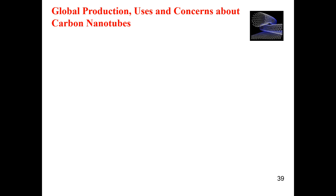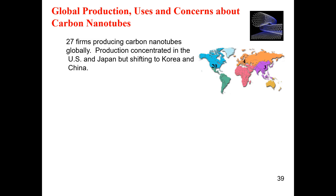There are 27 firms producing carbon nanotubes globally. Production is concentrated in the US and Japan, but then shipped to Korea and China. The major carbon nanotube production facilities are basically located in the US and Japan. After being synthesized, these materials are then shipped to Korea and China for making excellent devices, since Korea and China are major hubs for nanotechnology device manufacturing.